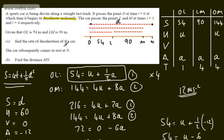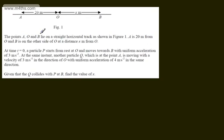All we've done is use SUVAT to find the missing values and substitute them in. Now let's look at the second question. Points A, O and B lie on a straight horizontal track. A is 20 metres from O and B is on the other side of O, a distance of x metres from O. At t equals 0, particle P starts from rest at O and moves towards B with uniform acceleration of 3 metres per second squared. At the same time particle Q, which is at point A, moves with initial velocity 3 metres per second toward O with uniform acceleration of 4 metres per second squared in the same direction. Given that Q collides with P at B, find the value of x.